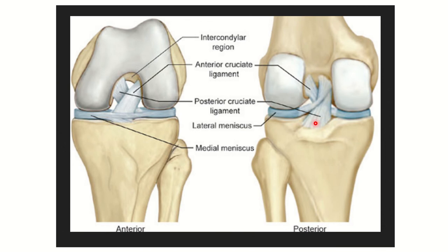The anterior cruciate ligament attaches to the anterior side of the tibia, and the posterior cruciate ligament attaches to the posterior side of the tibia. We can also see the medial meniscus and lateral meniscus. In the second picture, we can see the posterior part — the posterior cruciate ligament attached to the posterior part of the tibia, along with the lateral and medial meniscus.